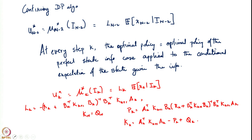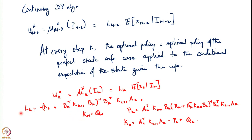If you recall how the controller was being computed, it was done in a recursive fashion. There were expressions we had written out that required recursive computation. The controller depended on a coefficient l_k, l_k in turn depended on K_{k+1}, and K_{k+1} was computed recursively — first computing K_N, then computing P_k, using P_k to compute K_k, and so on.